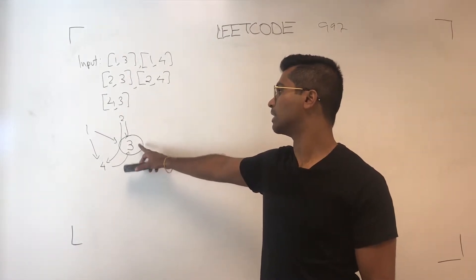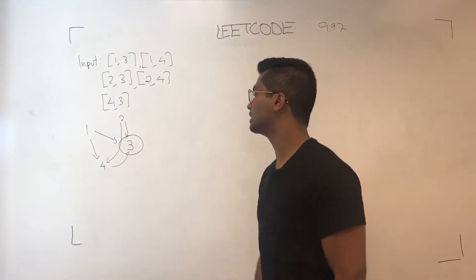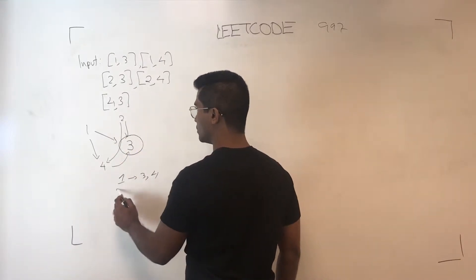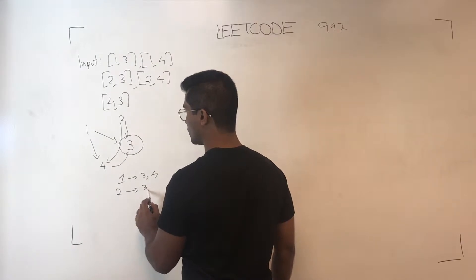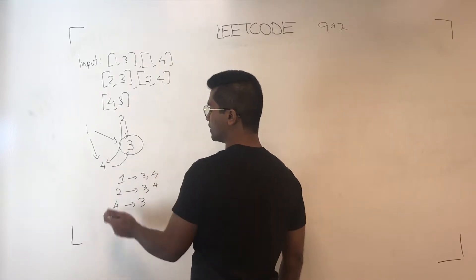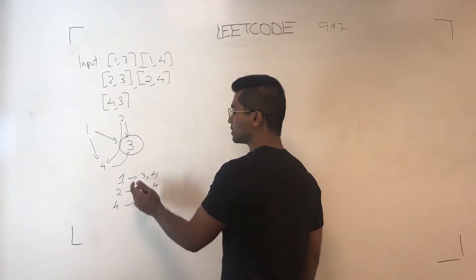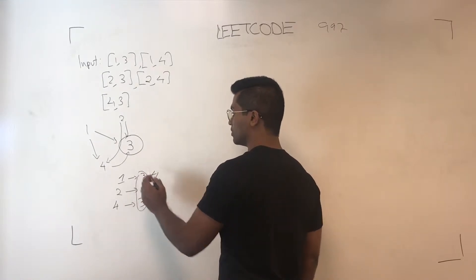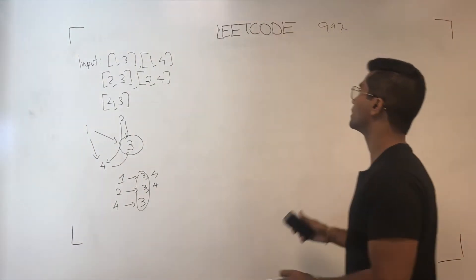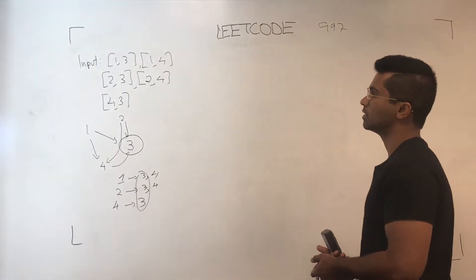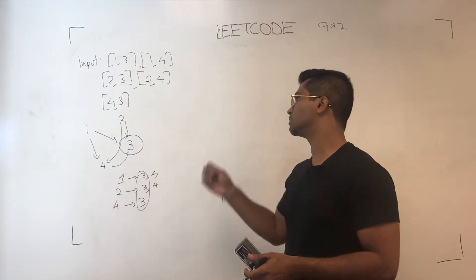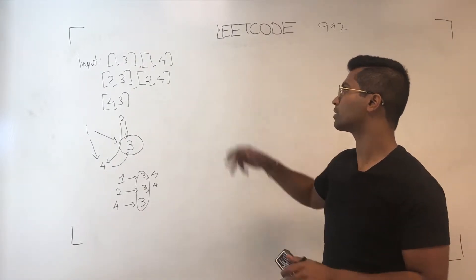The town judge is singled out because he has no outgoing edges. So the adjacency list would look like: one is trusting three and four, two is trusting three and four, four is trusting three. Three isn't on here because three doesn't have any outgoing edges, and it is common to all the people.